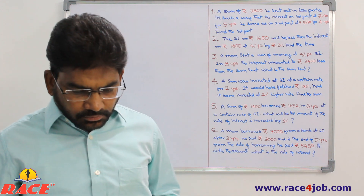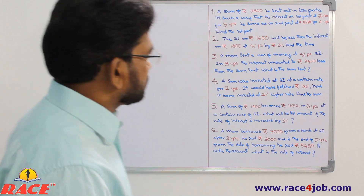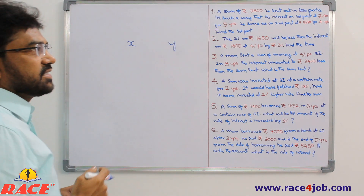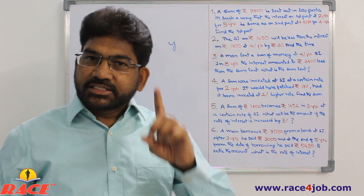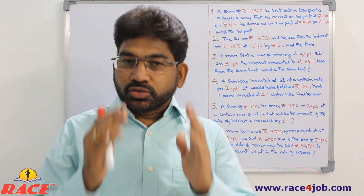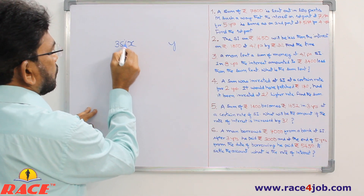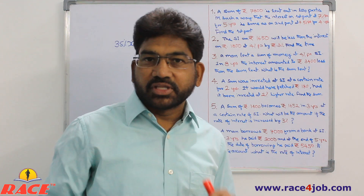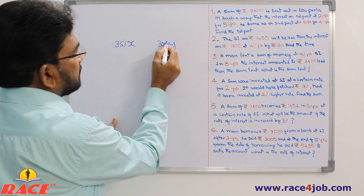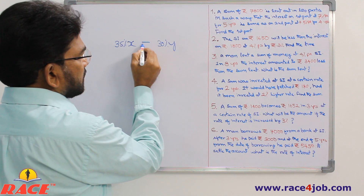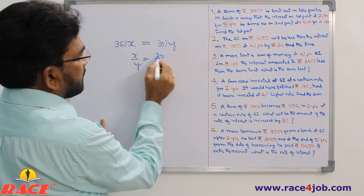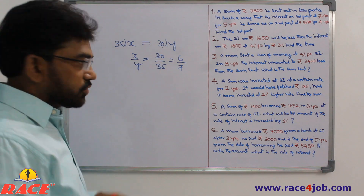But here is the simple shortcut. Take the parts as x and y. On the first part, 7% for 5 years means 35% interest on x. On the second part, 7.5% for 4 years means 30% interest on y. Since the interests are equal: 35% of x = 30% of y, so x/y = 30/35 = 6/7.